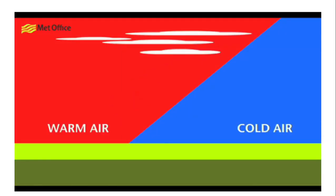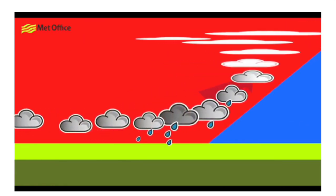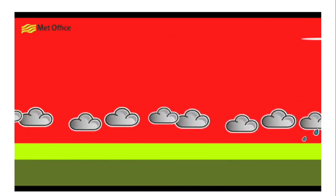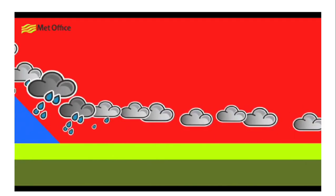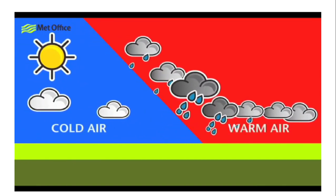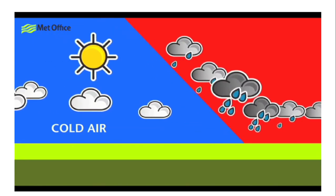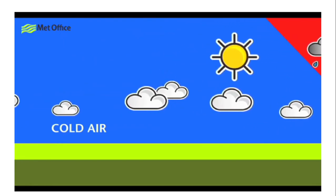Warm fronts are easy to spot because you see the leading edge of high cloud approaching on the horizon across clear skies. However, warm fronts leave clouds behind and the following cold front sneaks in under the cover of those clouds. But remember that pressure falls with a warm front because the air is less dense - well the opposite is true with a cold front. A cold front is like a wedge: the air is colder and more dense than the warm air and it scoops it up, causing the pressure to rise, which we can spot using a barometer.